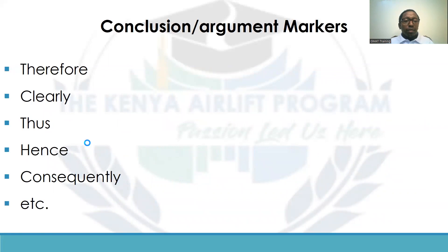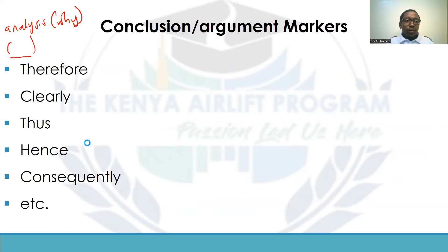There are some markers that can show you that a statement is a conclusion or an argument: therefore, clearly, thus, hence, and consequently. If you see some of these, you'll probably know that whatever comes before is our analysis — the why or the reason for this conclusion. These are just examples; they are not a full set of markers. But whenever you see these markers, you know that a conclusion or argument is coming.